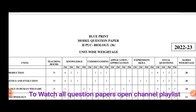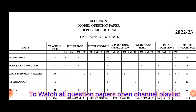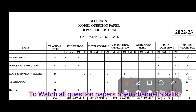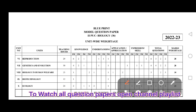They have given a blueprint in this. The blueprint shows unit-wise weight. You can see the total questions and marks weight. For example, for Reproduction they have given 28 marks — divided into 1 mark, 2 mark, 3 mark, and 5 mark questions. You can see how they have divided that here.